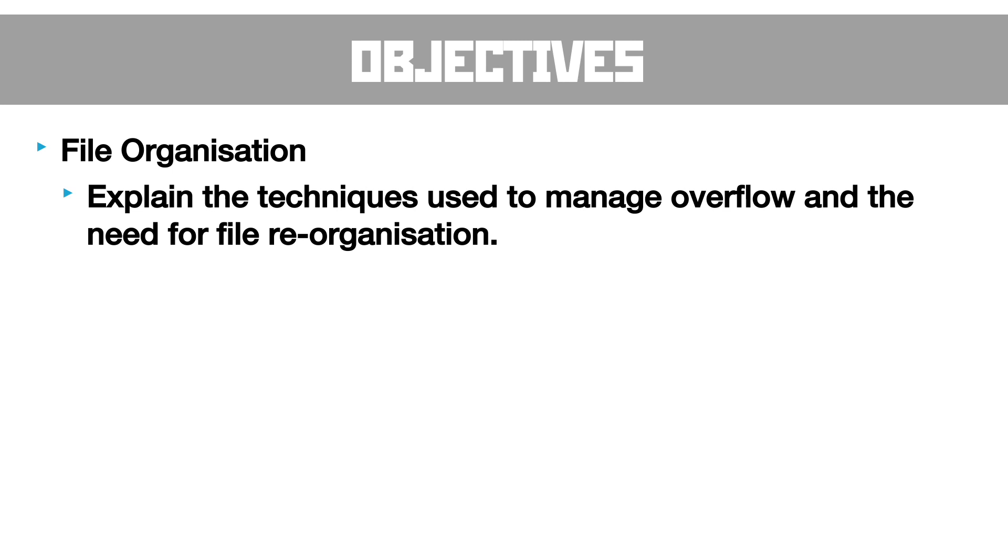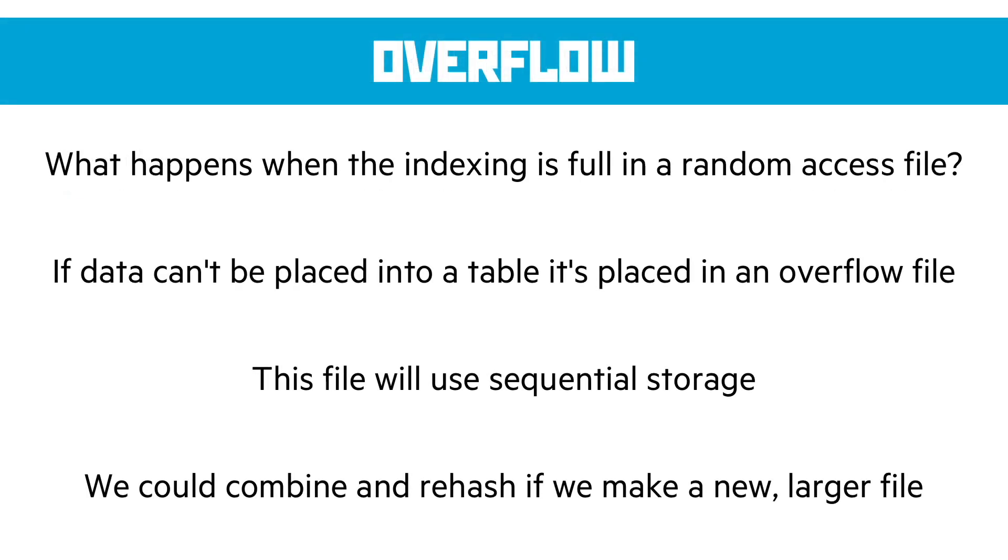Our final objective is explaining the technologies used to manage overflow and the need for file reorganization. So overflow is what happens when the indexing is full in a random access file. If we can't put the data into the table, it's placed into an overflow file that uses sequential storage. So it's a bit like, if we can't fit it in here, we might as well stick it somewhere. And we'll just use the simplest possible method to put it in there.